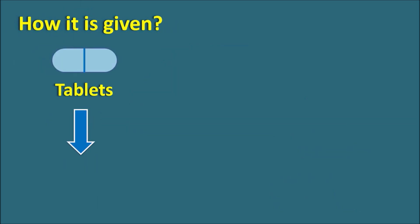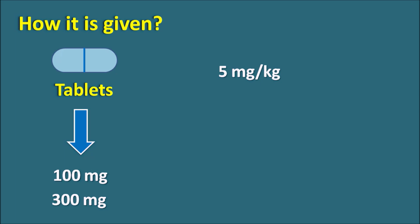Isoniazid is available as tablets at doses of 100 mg and 300 mg. The dose depends on patient condition — it can be given initially at 5 mg/kg in adult patients, with a maximum of 300 mg per day. The dose can be increased up to 15 mg/kg, with a maximum dose of 900 mg per day. The dose should be individualized based on patient condition.